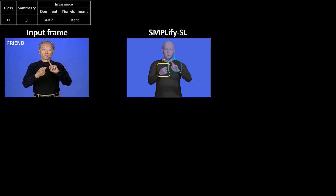By reconstructing one frame of the sign FRIEND from class 1A, we illustrate how we upgrade the baseline method SMPL-X-SL to create Signify. The hand poses are reconstructed very differently. The signer's left hand is correctly reconstructed, but the right is not.